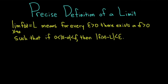Here you see the definition on the screen. The limit of f of x as x approaches a equal to l means for every epsilon greater than 0, there exists a delta greater than 0, such that if the absolute value of x minus a is less than delta, then the absolute value of f of x minus l is less than epsilon. So what this really means: this absolute value of x minus a is basically saying if the distance between x and a is less than delta, then the distance between f of x and l is less than epsilon. In other words, when x is close to a, f of x is close to l, because we can make these distances as small as we like.